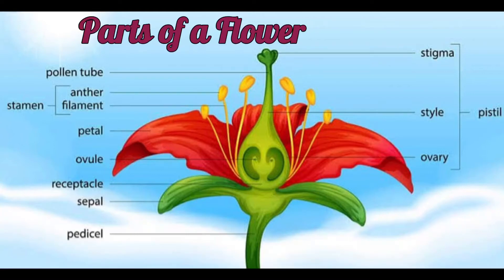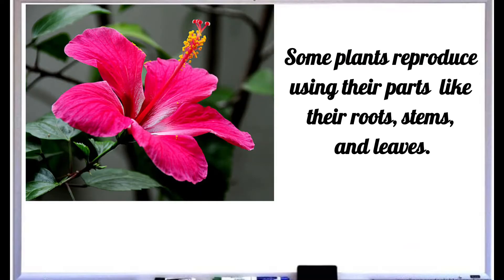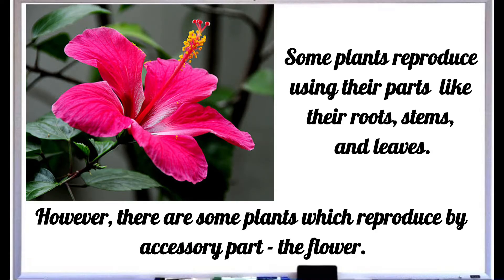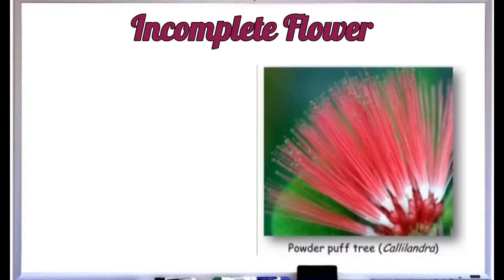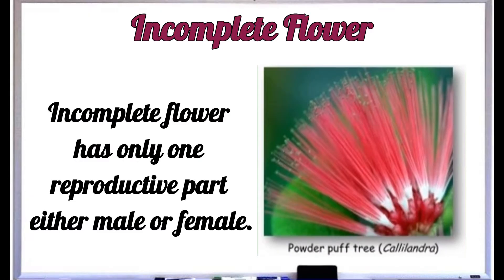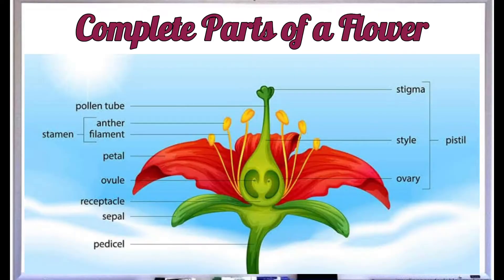Parts of a flower. Some plants reproduce using their parts like their roots, stems, and leaves. However, there are some plants which reproduce by accessory part — the flower. An incomplete flower has only one reproductive part, either male or female. A complete flower has the following parts: receptacle, sepals, petals, stamens, and pistils.